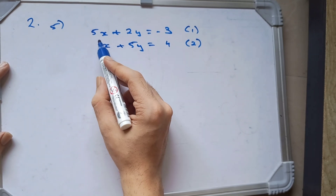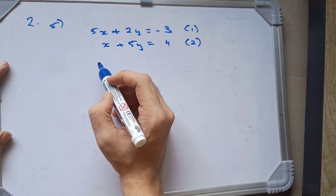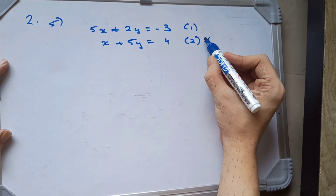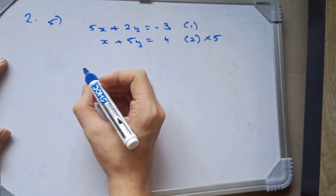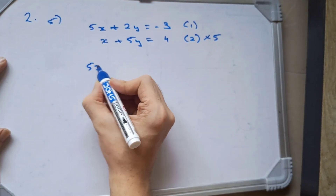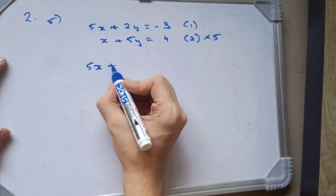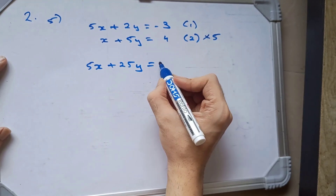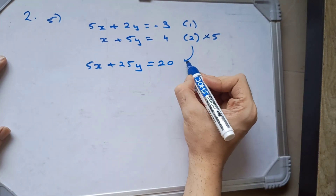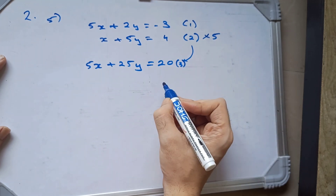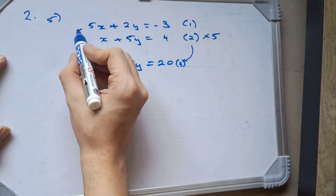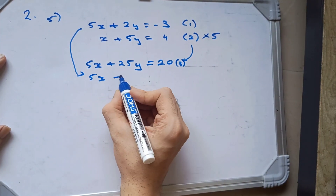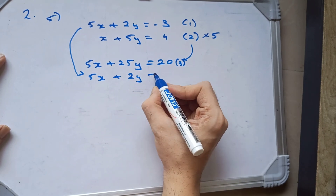As you can see, if we multiply 5 here, the equations will be the same and it will be cancelled out. So if we multiply it by 5, we will get 5x plus 25y. 4 into 5 is 20. This will be equation number 3. And our equation 1, as it is, will come down.